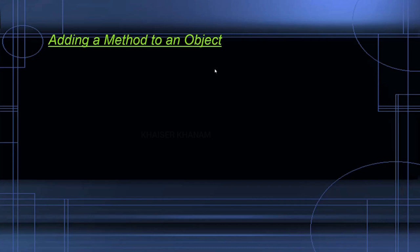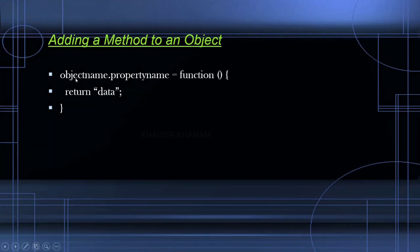We can also add methods inside an object after creating it. As we have seen how to add properties — since JavaScript objects are dynamic in nature, at runtime we can add properties — in the same way at runtime we can add methods as well. We do it like: object name dot property name equals a function definition, and inside the function we return whatever data we want.